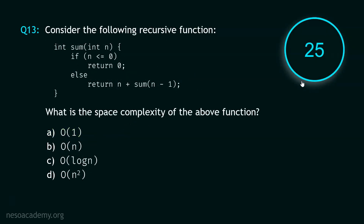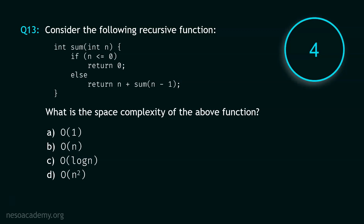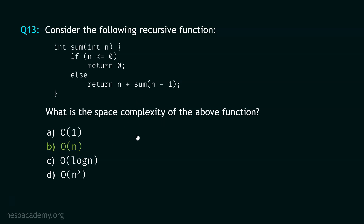Let's move to question number 13, and your time starts now. Stop. The correct option is option B: O(N). This is a recursive function — we can observe that the sum function is calling itself within its own body. The depth of recursion is N, therefore the space complexity is O(N).